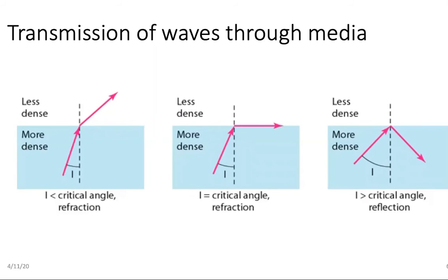When the angle of incidence is greater than the critical angle, refraction turns into reflection — the wave does not get refracted at all. This principle is called total internal reflection, and this is exactly what happens inside fiber optic cables. The angle of incidence is kept greater than the critical angle so the light does not escape the medium; it stays inside, gets reflected internally, and carries the data to the other end.